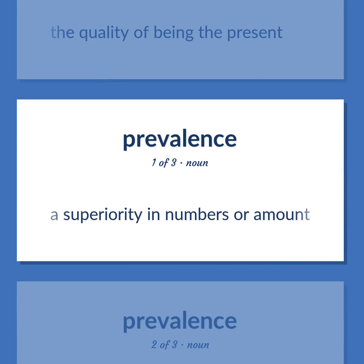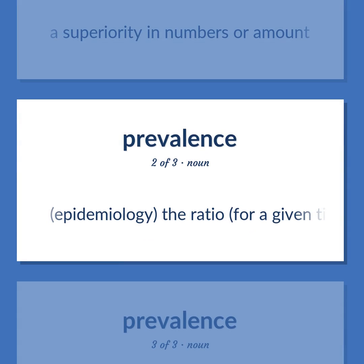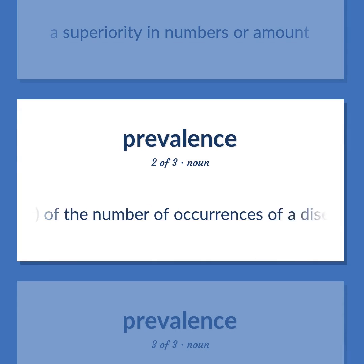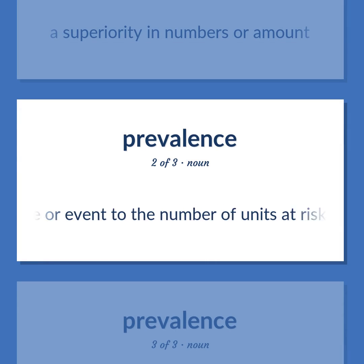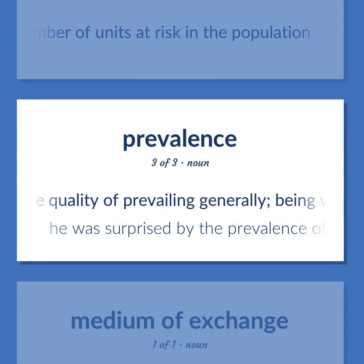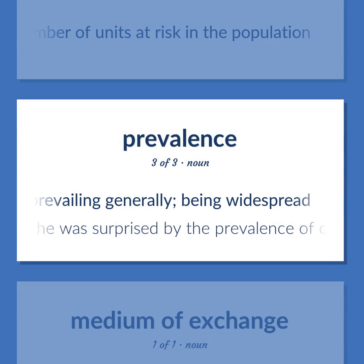A superiority in numbers or amount. Epidemiology: the ratio, for a given time period, of the number of occurrences of a disease or event to the number of units at risk in the population. The quality of prevailing generally; being widespread. He was surprised by the prevalence of optimism about the future.